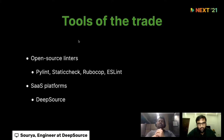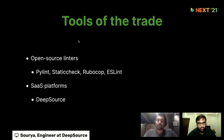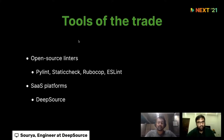The most common tools you could use to find bugs include: pylint for Python, staticcheck for Go, RuboCop for Ruby, and ESLint for JavaScript. There are many other tools as well, and then there are SaaS platforms exactly like DeepSource.